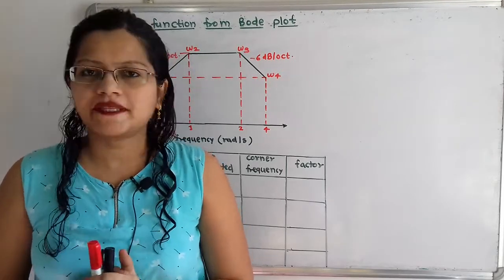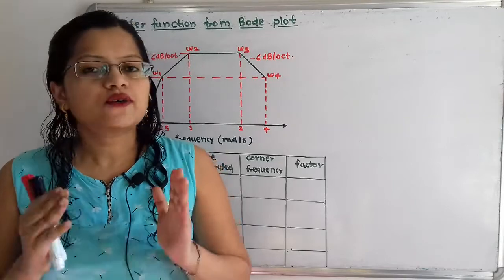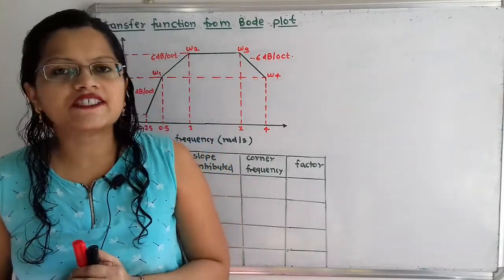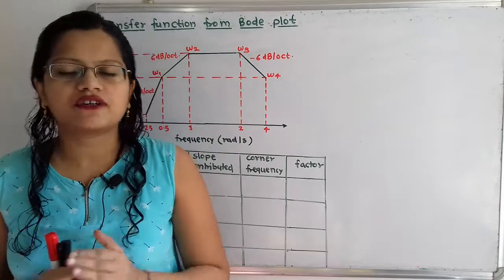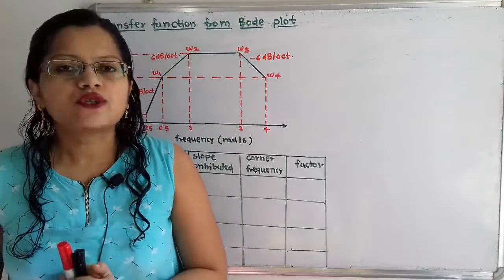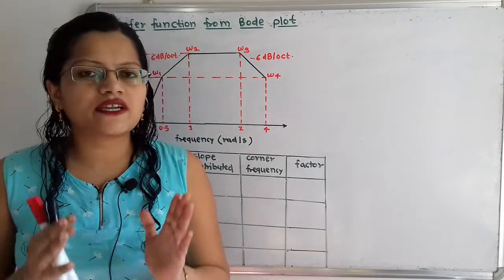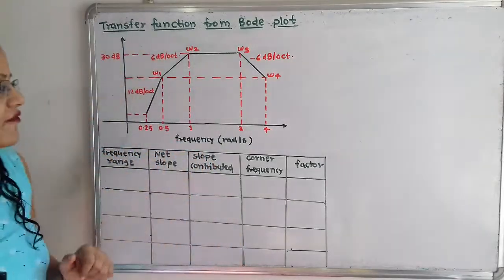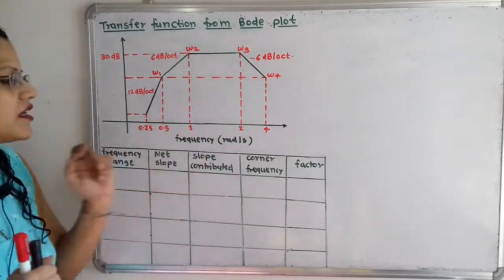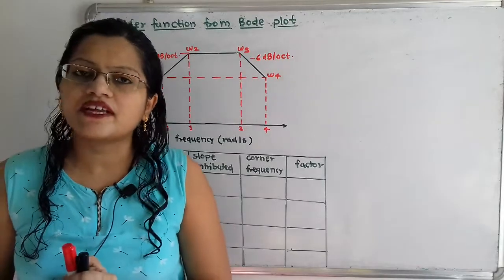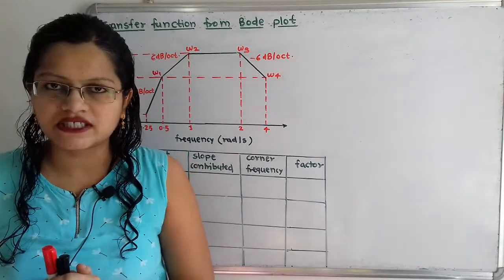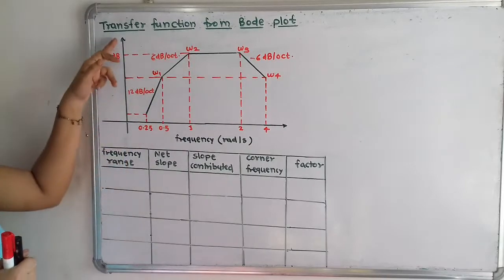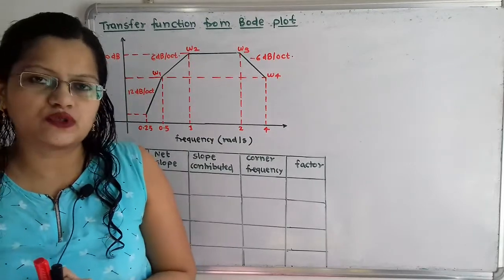Hello friends, this is Priyanka. Today we are going to solve a problem on transfer function from Bode plot. Let us first understand what is the given Bode plot. On the horizontal axis, frequency in radians per second is given, and on the vertical axis, magnitude in dB is shown.